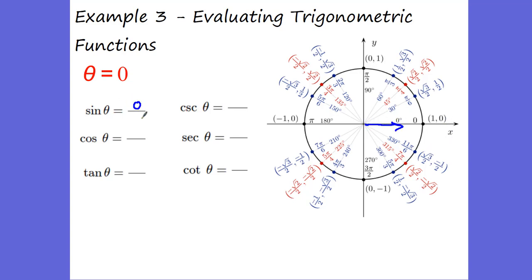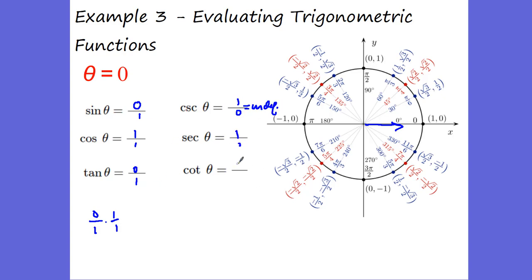What if our angle is zero? Sine of zero is zero over one, which is zero. Cosine is one over one, which is one. Tangent is sine over cosine — zero over one divided by one over one — equals zero. Now, cosecant would be one over zero, but that's undefined — you can't have zero in the denominator. Secant is one over one, which is one. Cotangent would be one over zero, which is also undefined. So cosecant of zero is undefined.